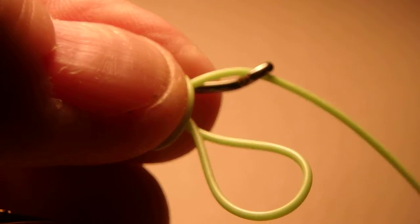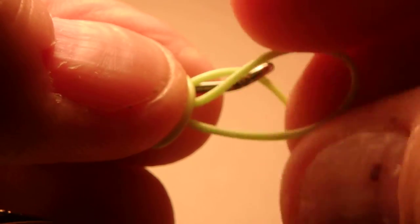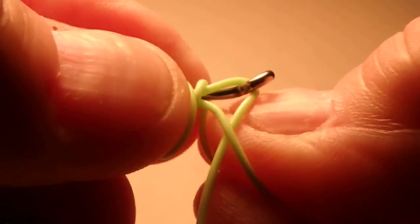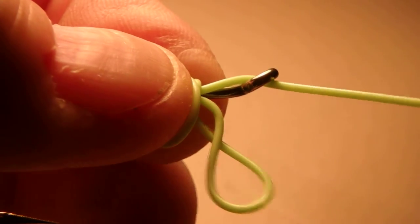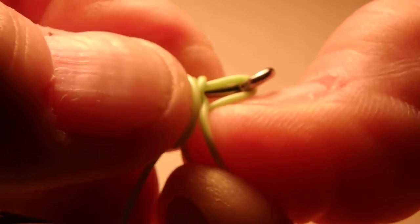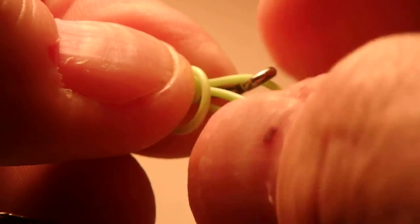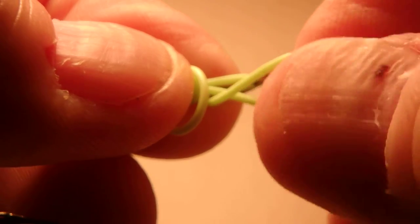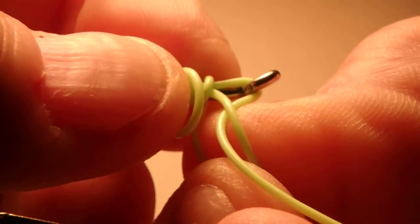Pull the remainder through the loop you just made. Do it again. Do it again. I usually use 4 wraps. If you need some slack, pull it out from the butt.